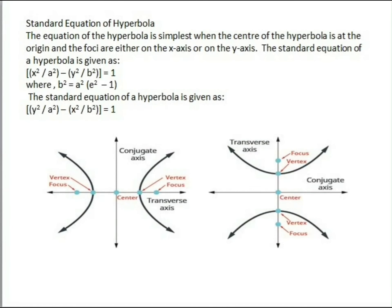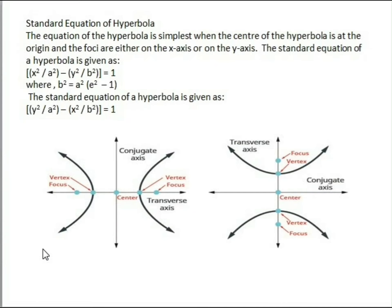Standard equation of hyperbola: when the transverse axis is along the x-axis and the conjugate axis is along the y-axis, the equation is x² / a² − y² / b² = 1, where b² = a²(e² − 1). When the transverse axis is along the y-axis and the conjugate axis is along the x-axis, the standard equation is y² / a² − x² / b² = 1.